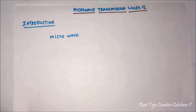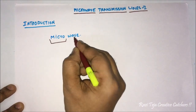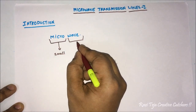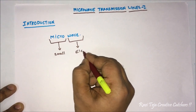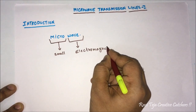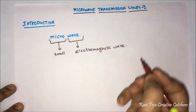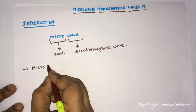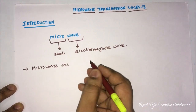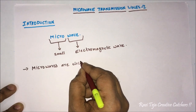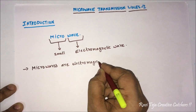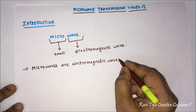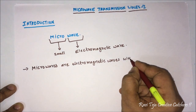Let's split the microwave word into two. Micro means small, and the wave we are considering is an electromagnetic wave — it can also be called a signal. So microwaves are electromagnetic waves; it's a combination of electric and magnetic fields.